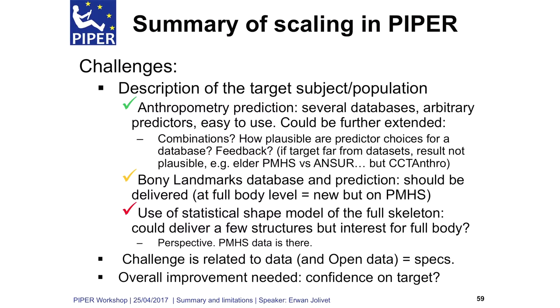Regarding body landmarks, as shown in the last presentation from Christophe, we have shown that it could work on one subject, but it should be delivered at the end of the project, so it will be a great improvement. Regarding the statistical shape model of the full skeleton, we could deliver some structures defined during the project. This is more a perspective method to be used inside Piper, but the relevant data will be delivered with the Piper release. The challenge is more related to the data — having access to open data to build such a database and use it during the Piper project.